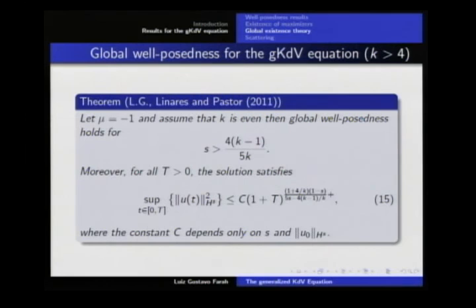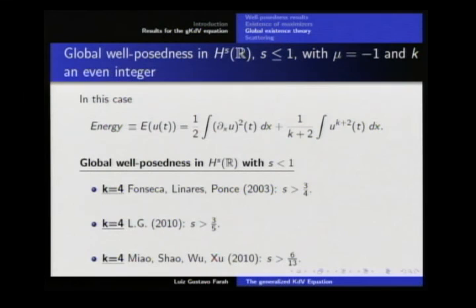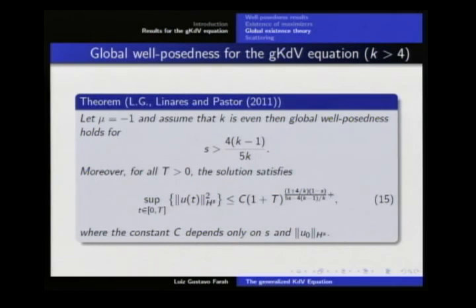For the supercritical case, in a joint work with Linares and Pastor in 2011, we proved global well-posedness for s bigger than a certain index. Taking K equal 4 in that index gives exactly 3/5, which matches my 2010 result. So in some sense, we are generalizing the result for the supercritical case. We also have some bounds for the growth of the H^s norm that depend on s and K.